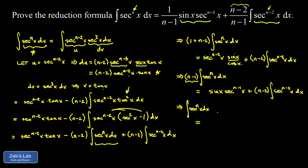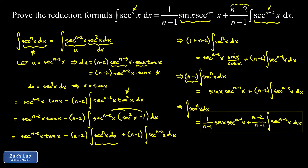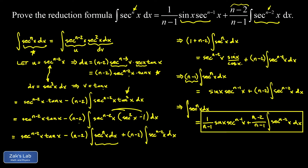We find that the integral of secant to the nth power equals one over n minus one times sine x times secant to the n minus one of x, plus n minus two over n minus one times the integral of secant to the n minus two of x dx. The derivation required a clever use of integration by parts — splitting the integrand so one piece was easy to integrate — then applying a Pythagorean trigonometric identity and recognizing the copy of the original integral.